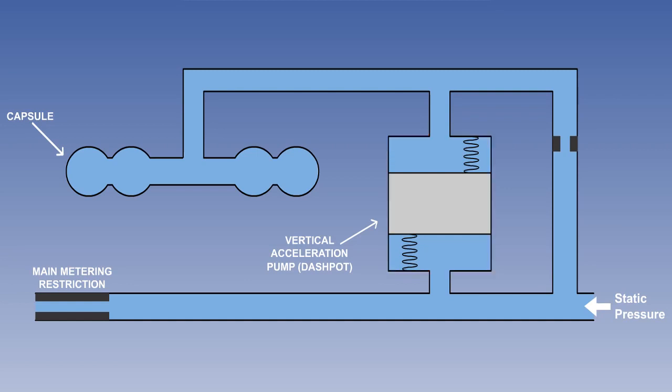Inside the dashpot is a piston which is centered by springs. As a climb or descent is initiated, the inertia acting on the piston in the dashpot displaces the piston, causing an immediate differential pressure. Once the climb or descent is established, the piston is slowly re-centered by the dashpot springs, and the pressure differential is maintained by the metering unit.